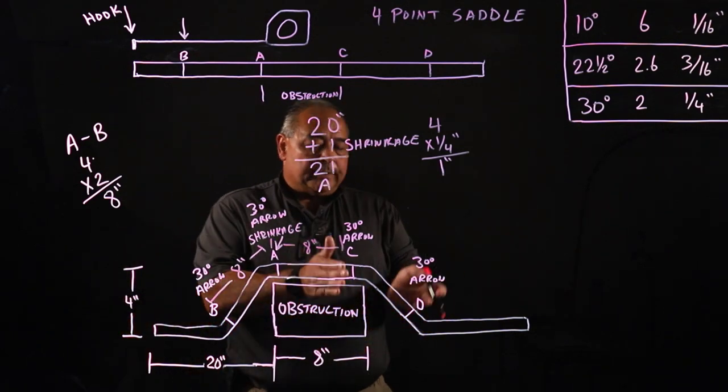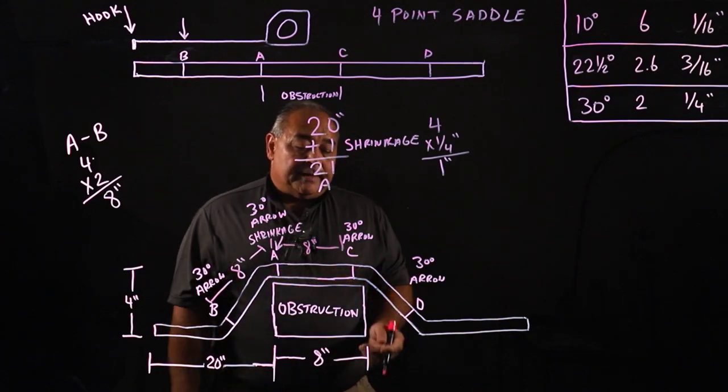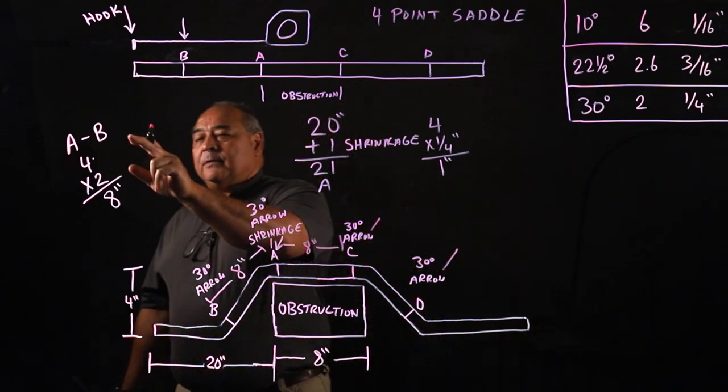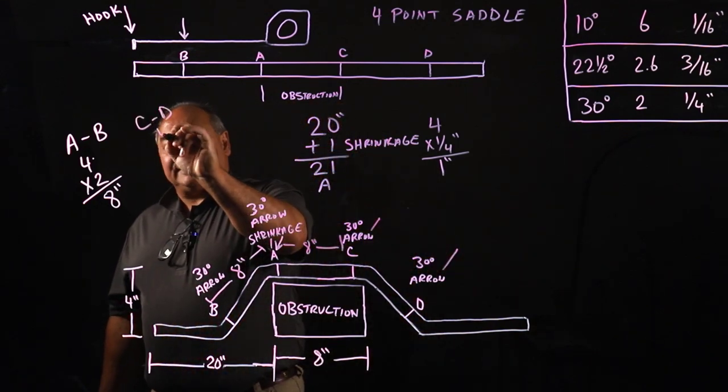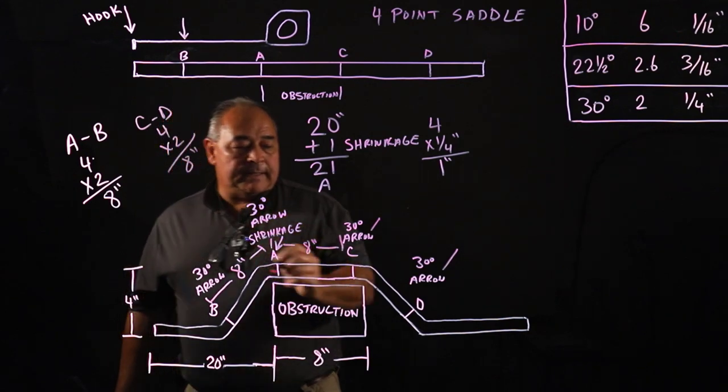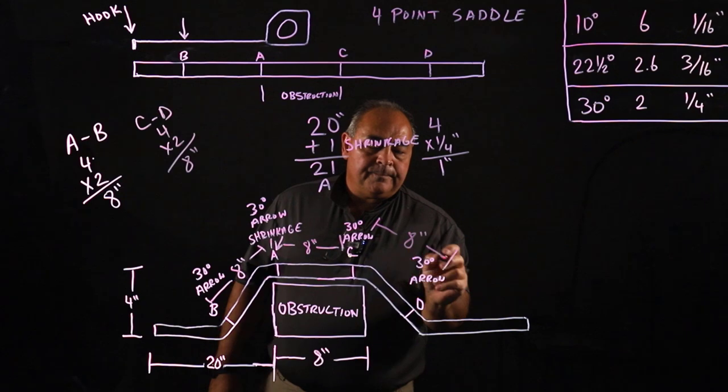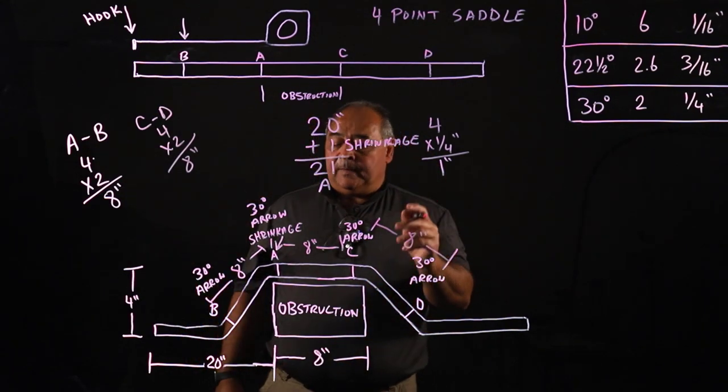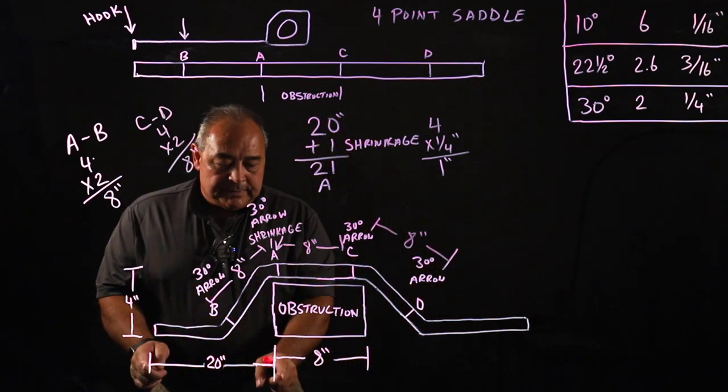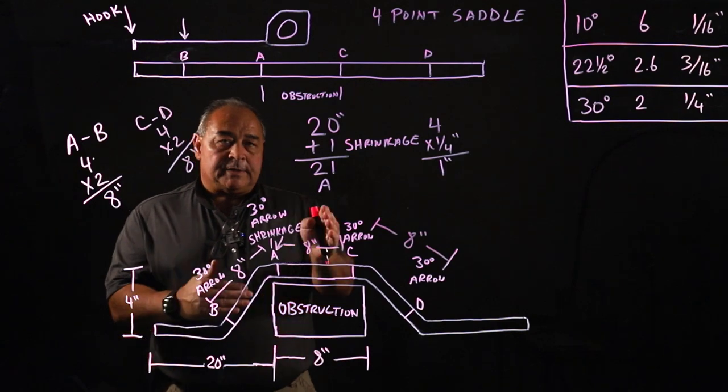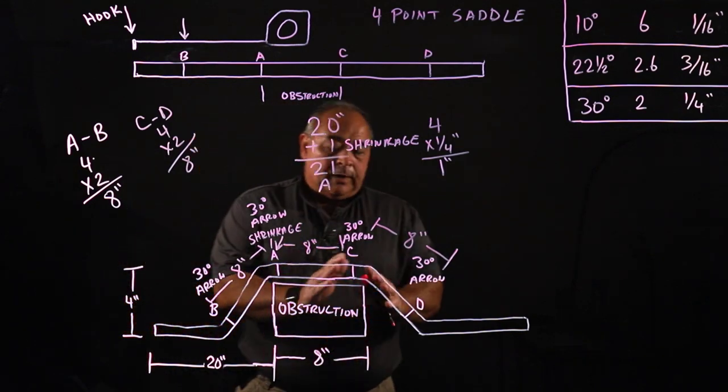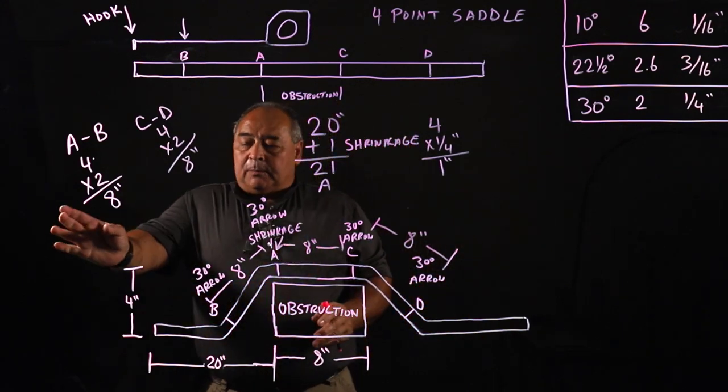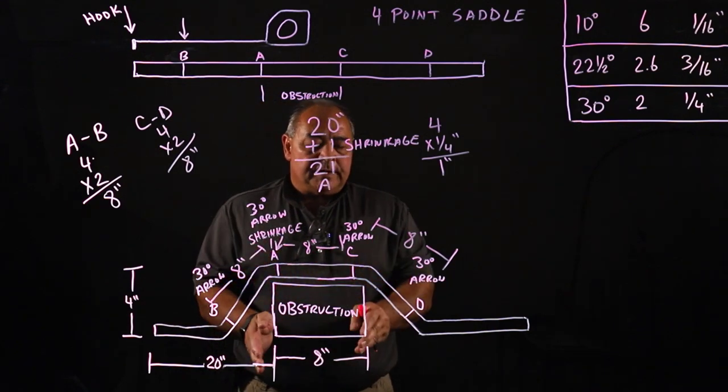And then the same thing, we're doing 30 degree offsets, basically a double offset, which is a four point saddle. So from C to D, it's going to be our same measurements over here as we have here. C to D is exactly the same times 2. It's 8 inches. Now we've got our marks on this straight piece of pipe. Our beginning stage was 20 inches. We put a mark at 21 because compensated for the pipe shrinkage is going to happen. We do not worry about pipe shrinkage anywhere else other than A. Everything else is our multiplier or our physical dimensions that we're trying to do.